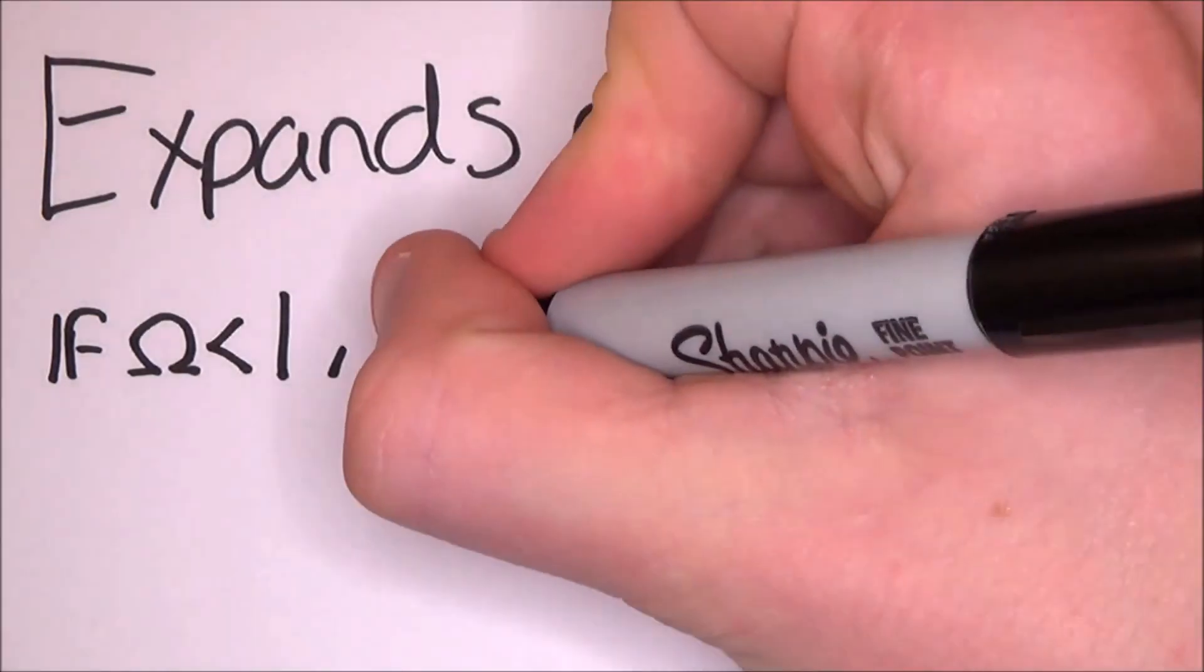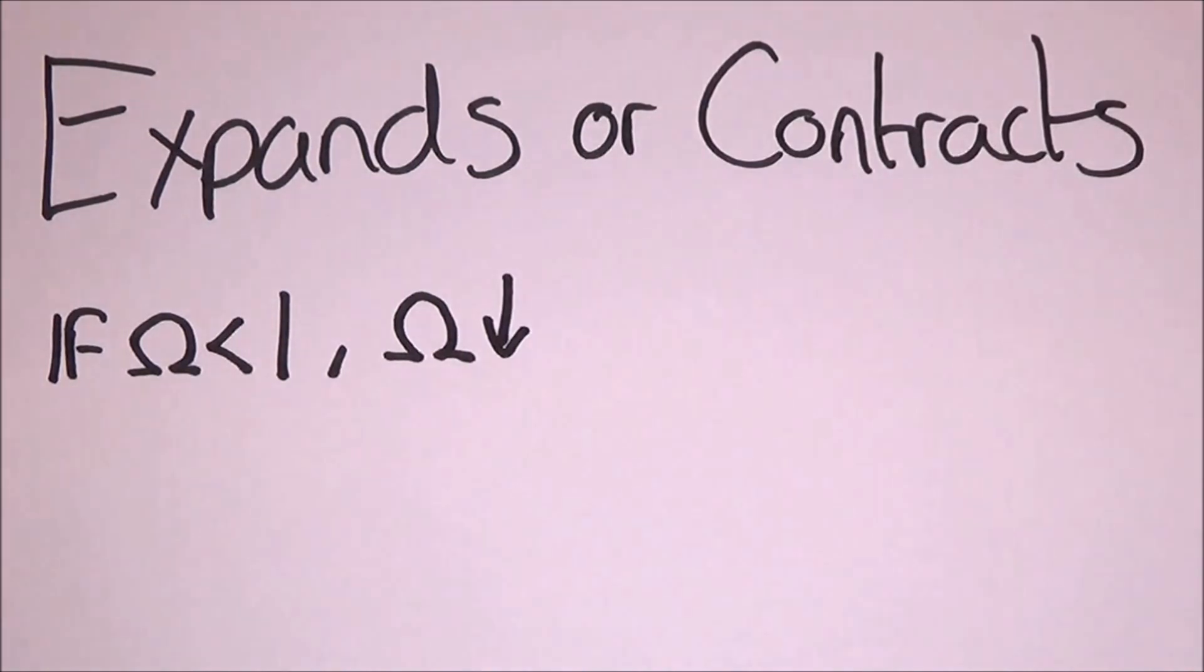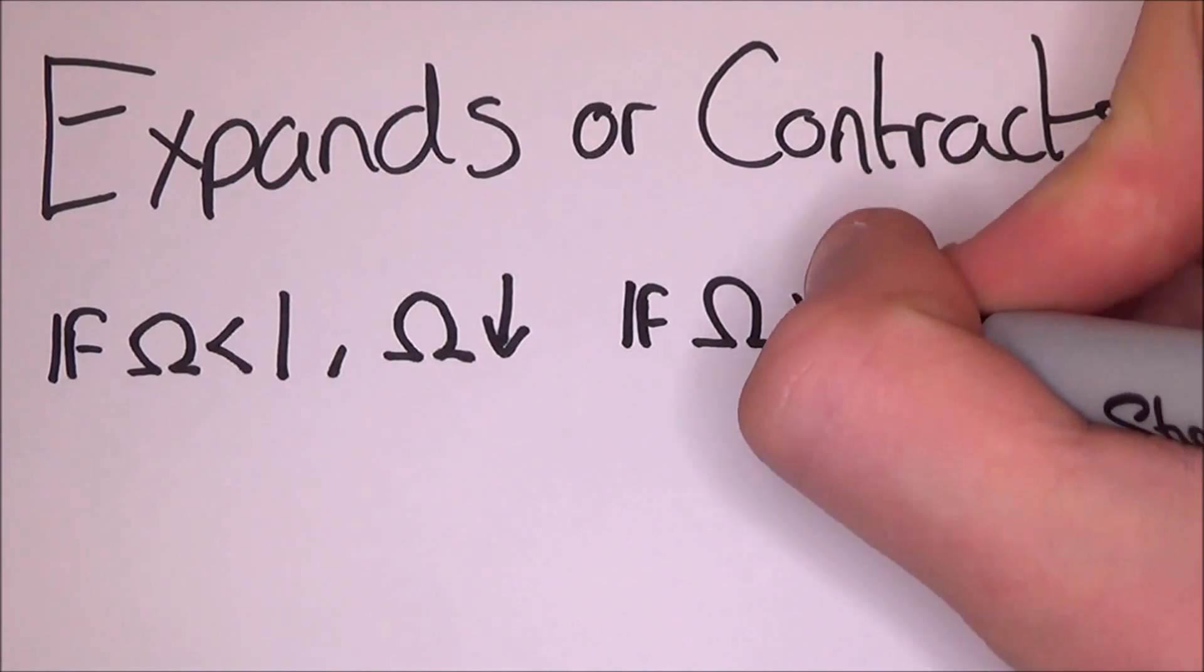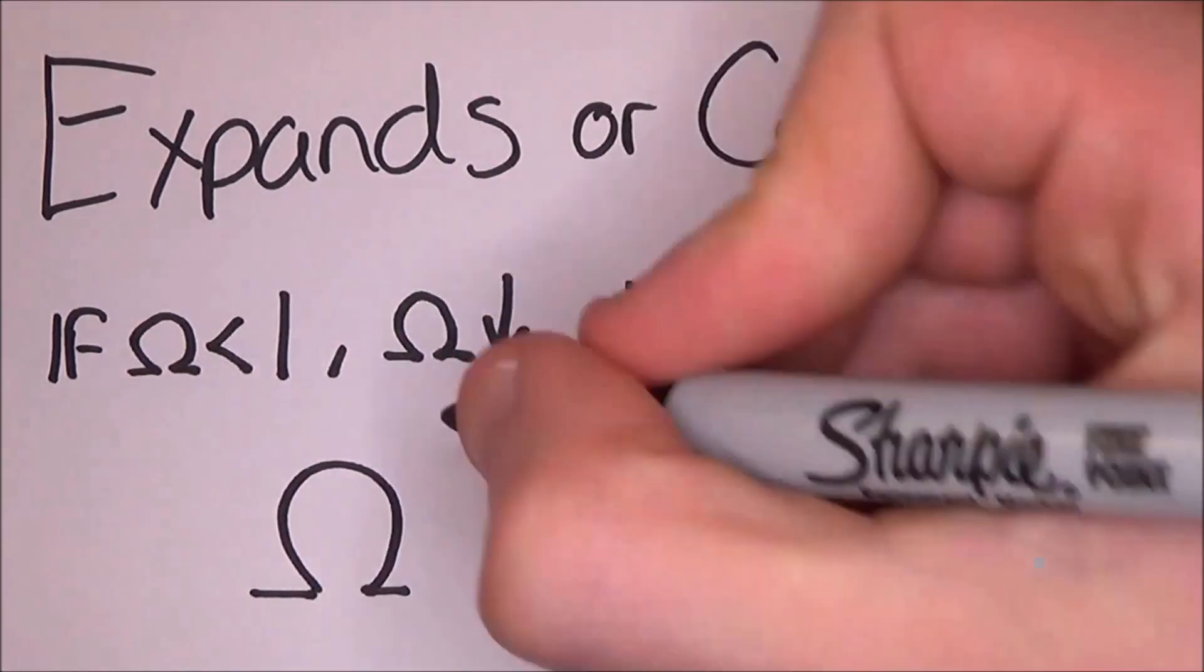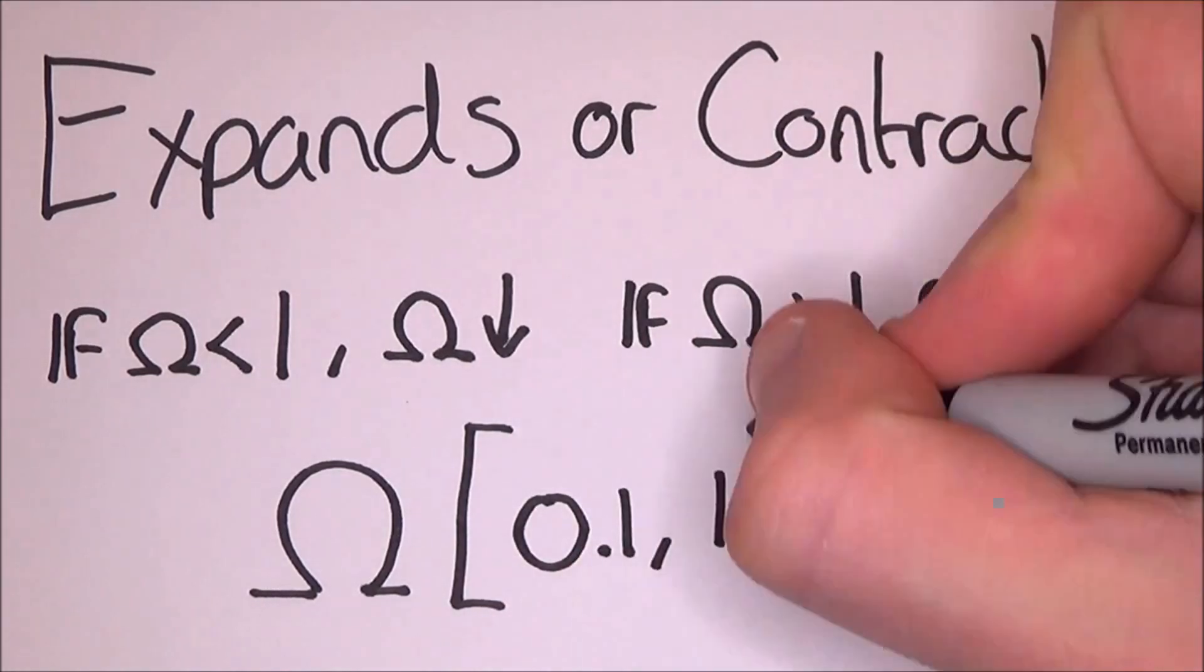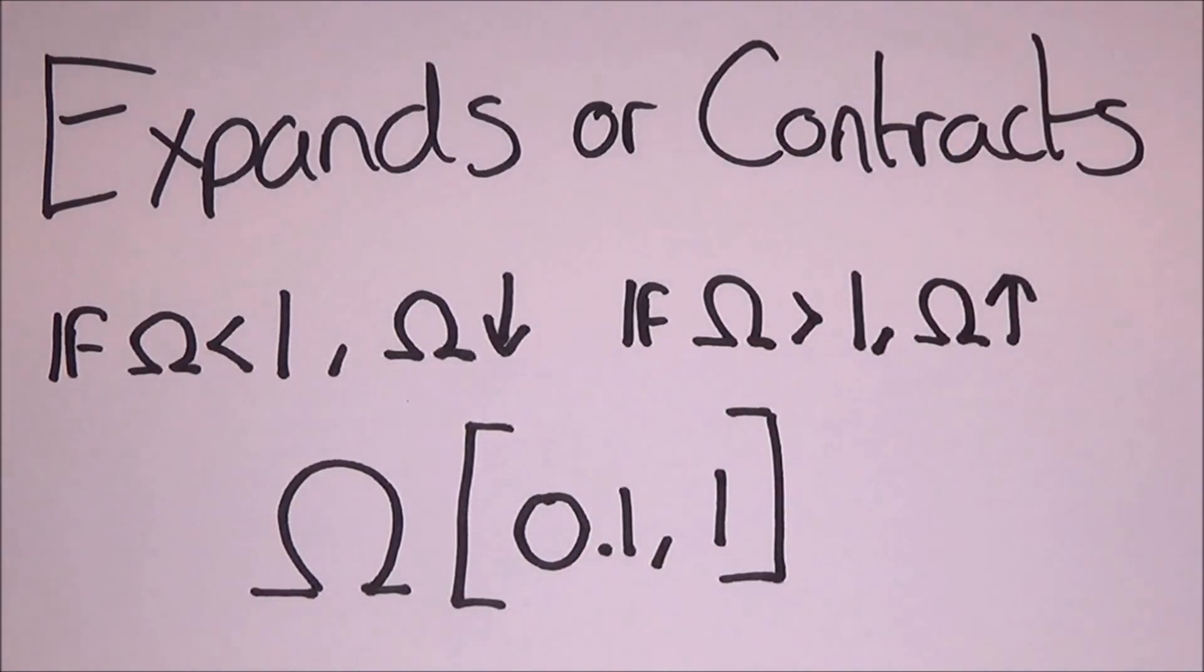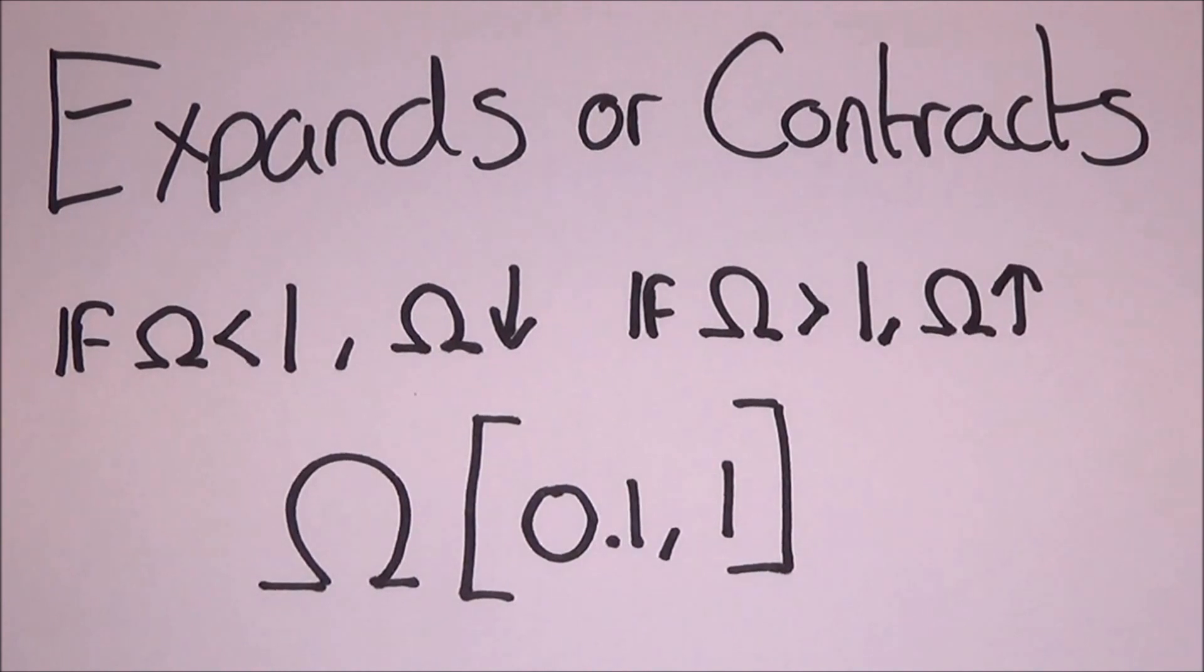If the universe started off with omega being less than 1, omega would decrease as the universe ages. If omega is greater than 1, omega would increase as the universe ages. The fact that it is somewhere between 0.1 and 1 today means that in the first second of existence, omega was almost 1.